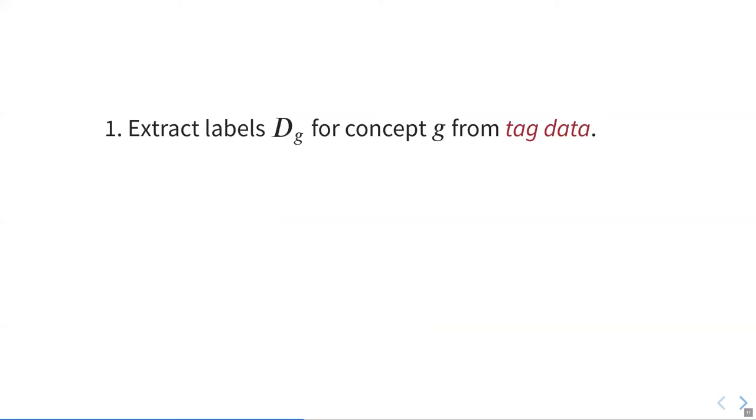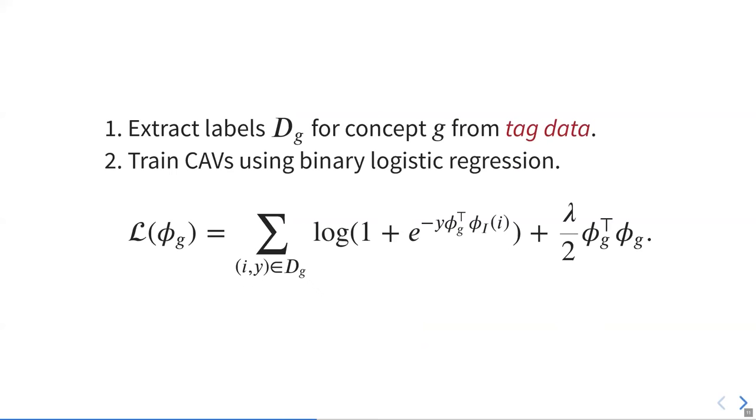The process for training our CAVs is as follows. We first extract labels for this concept from tag data. We have a positive tag for an item if some user has labeled that item as business like, for example. We have a negative tag for that item if some user has previously used the tag business like, so it's something they do think about, but they've never tagged this specific item as business like. That gives us positive and negative tags for a set of items. Then we train CAVs on the set using binary logistic regression, where the business likeness of an item is predicted by the dot product of the concept activation vector for business like and the item embedding.